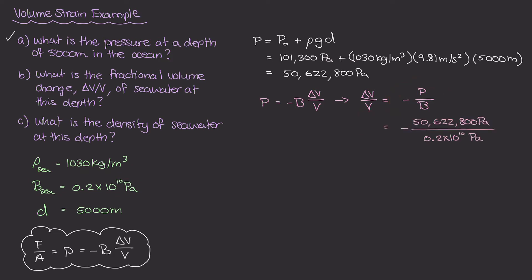And that becomes this right here. We have our pressure, we have our bulk modulus, we have our negative sign. And this turns out to be again a very small number. This is negative 0.0253114. And this value is dimensionless.